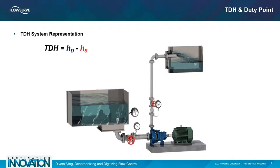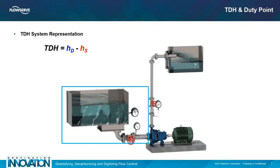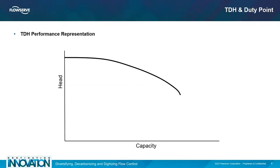Looking at a relatively simple system, the downstream portion highlighted will have a certain amount of pressure, frictional velocity, and elevation for the pump to overcome. Similarly, the upstream side will have a certain pressure, frictional velocity, and elevation to be endured by the pump. Subtracting the discharge components less the suction components will provide the TDH produced by the pump as seen by its characteristic performance curve. Here, five points of operation were chosen from pump shutoff to end of curve in order to provide a graphical representation of TDH.